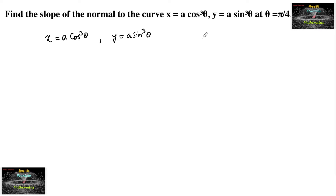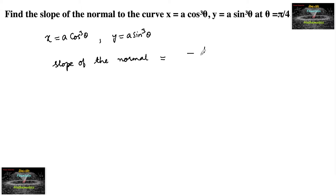At theta equal to pi by 4, we need to find the slope of the normal. Since we know that the slope of the normal to any curve is minus 1 upon the slope of the tangent to the curve, because the normal and tangent are perpendicular to each other.